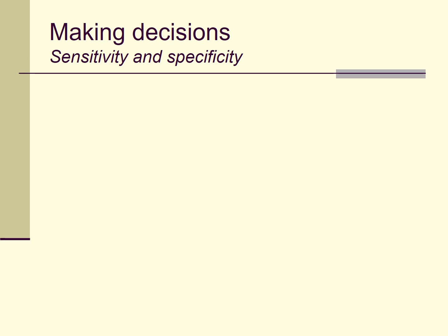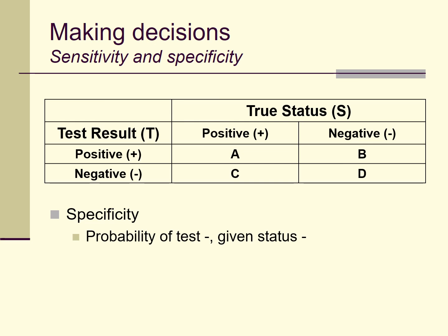A similar calculation is specificity — the probability that the test says the person doesn't have a disorder given that they truly don't. Mathematically: probability(test negative | status negative) = D divided by (D + B). Of all the people who are truly status negative for the disorder, how many are also test negative? Specificity is the likelihood that a test says someone does not have the condition when they really do not have it.